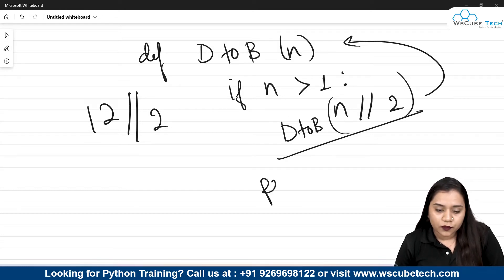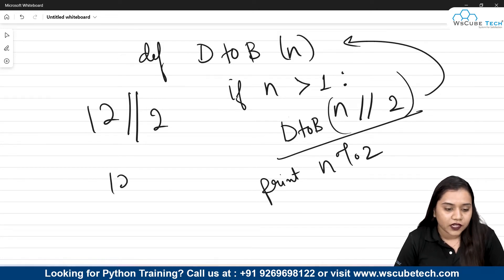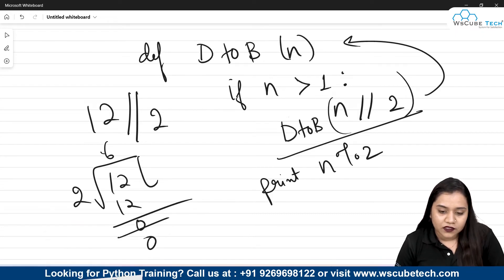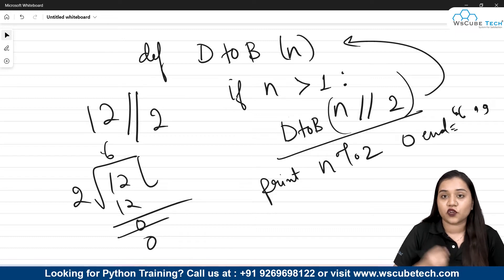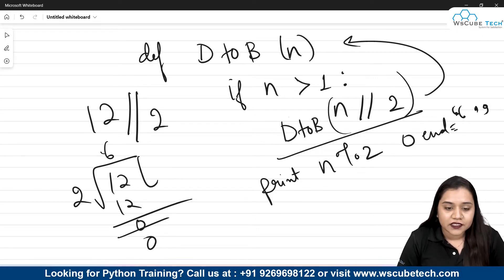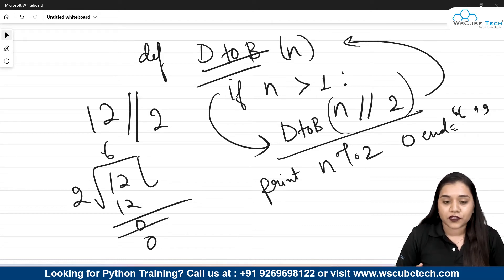After that, we print n modulus 2 — that means whatever remainder we get when n is divided by 2. For 12 divided by 2, 6 times 2 is 12, so the remainder is 0. We also write end equals to an empty string so the next value will settle next to it. This is how d_to_b calls itself again inside the function — that is our recursion process.